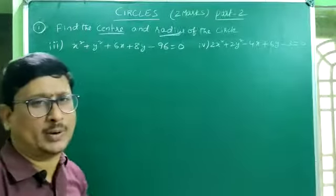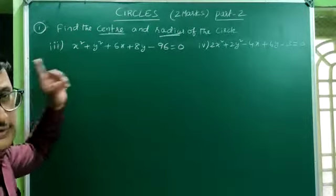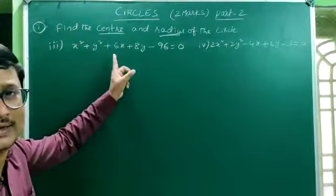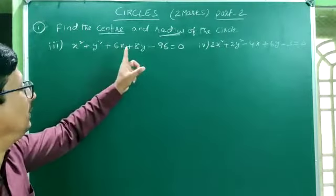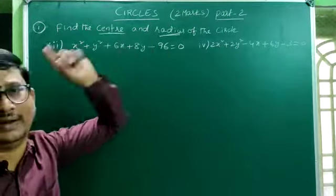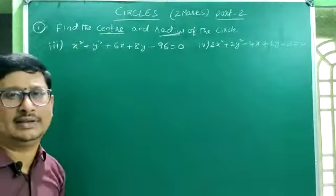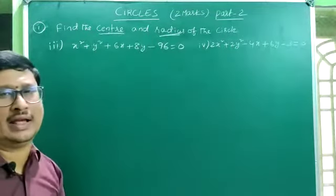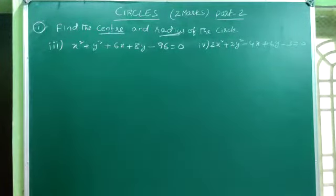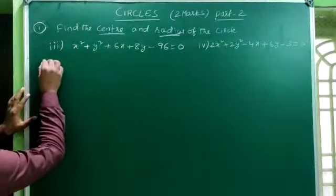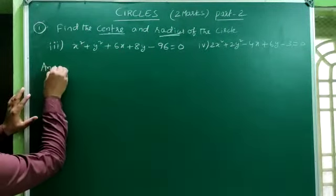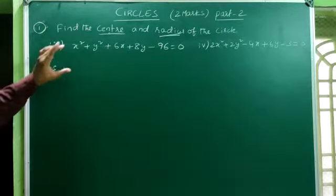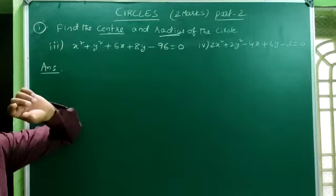Let's go to the next problem. The equation is x² + y² + 6x + 8y − 96 = 0. We will find the center and radius of this given circle equation.